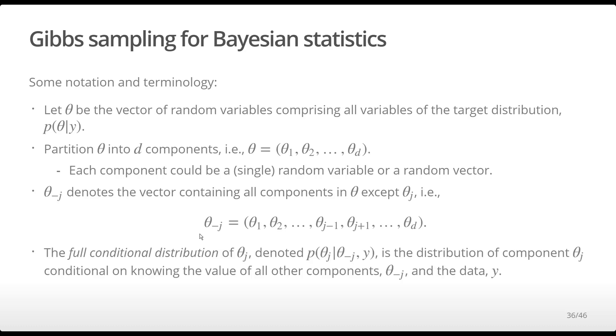The full conditional distribution of theta j is the distribution of component j, conditional on theta minus j, and since we're in the context of Bayesian analysis, the data as well.